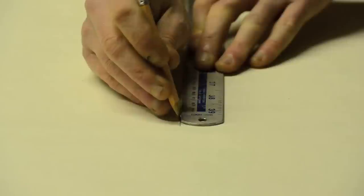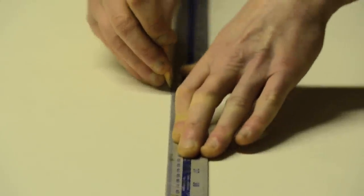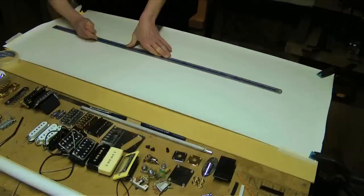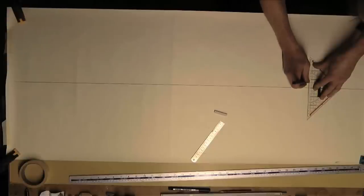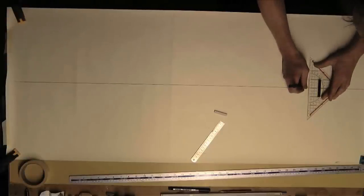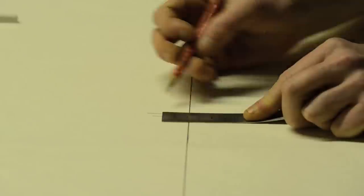So the first thing I'm going to draw is the centre line. Every guitar has a centre line. The next thing to do is to draw the nut and draw across each side and make a mark.